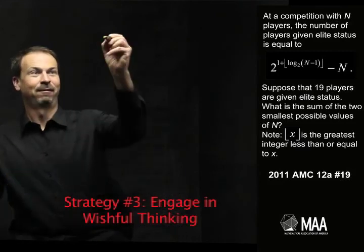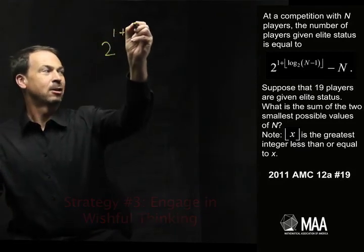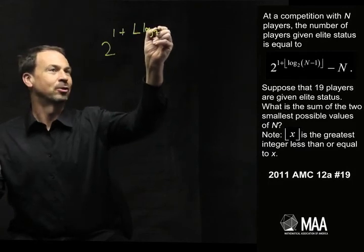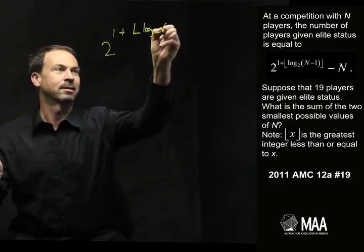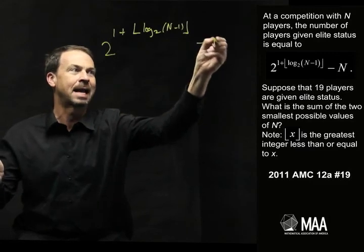What I don't like is this formula. I'm just going to be honest. I'm really going to be spot on honest with my emotions. 2 to the 1 plus square brackets log base 2 N minus 1 N to square bracket minus N.